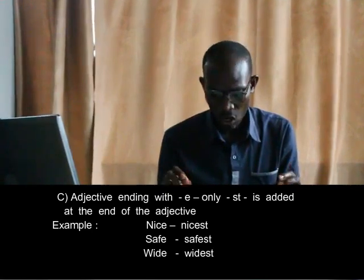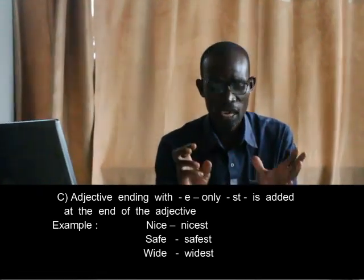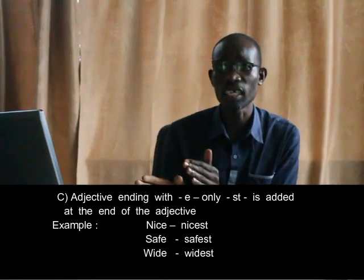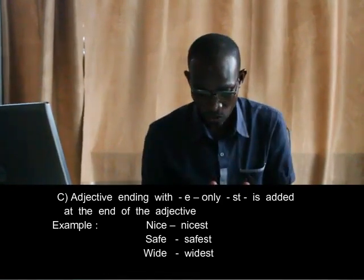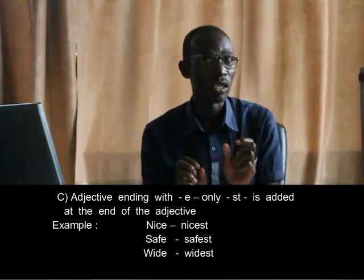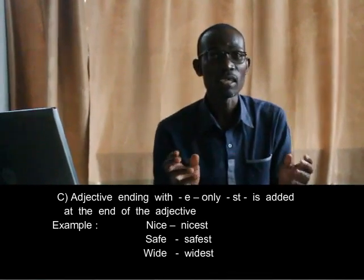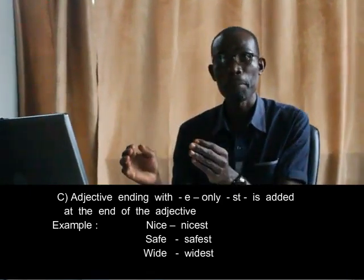Rule number three: adjectives ending with E — only ST is added at the end. You don't need to add EST. So long as the adjective ends with E, we just add ST. For example, 'nice' — N-I-C-E — that adjective ends with E, so we just add ST: 'nicest.' Another one: 'safe' — we just add ST: 'safest.' This is the safest place of all.